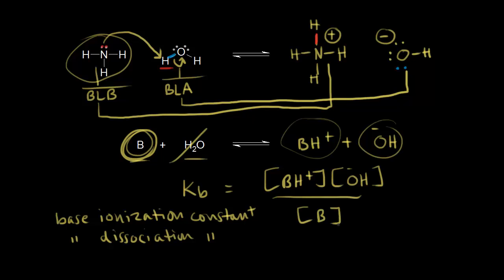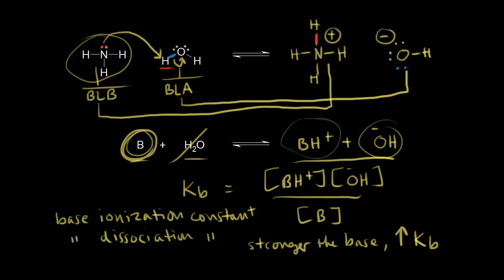You can think about KB the same way we thought about KA. The higher the value for KB, the stronger the base, because you're producing more products. So the stronger the base, the larger the value for KB.